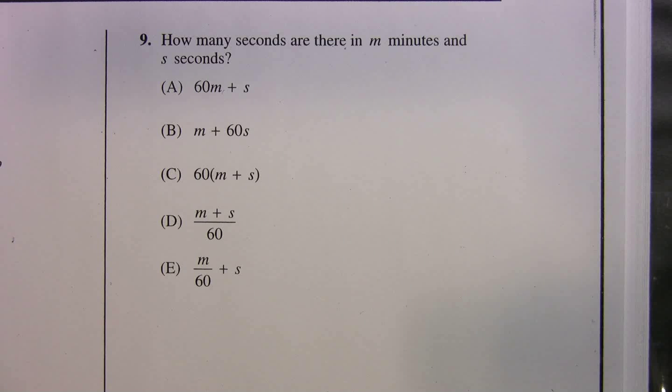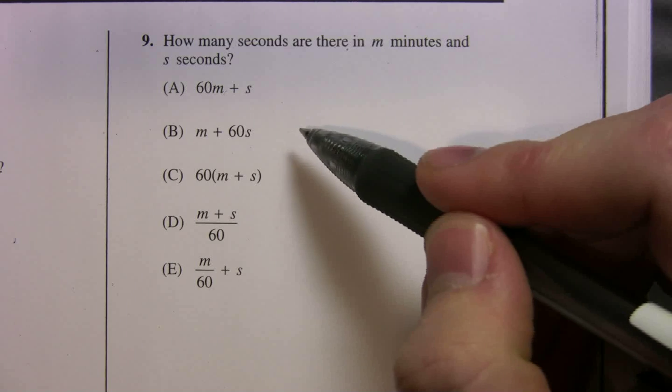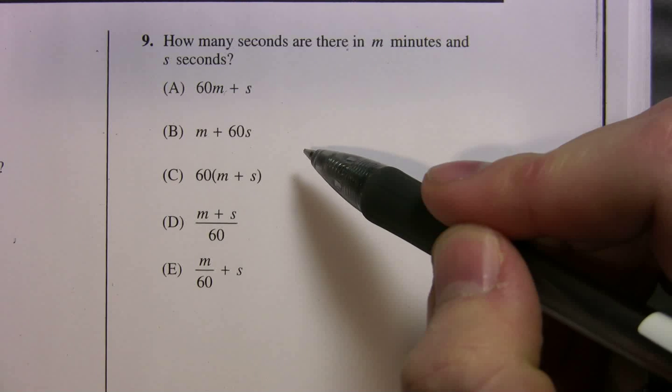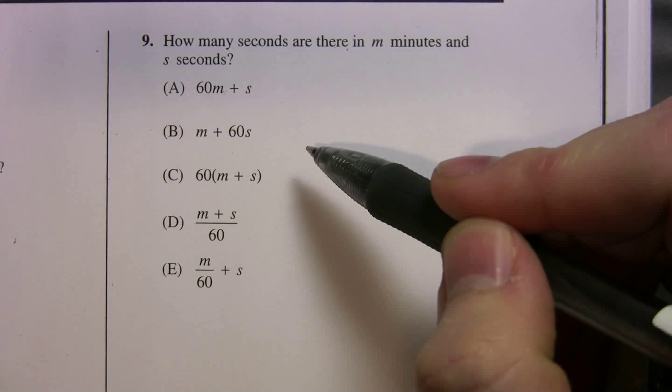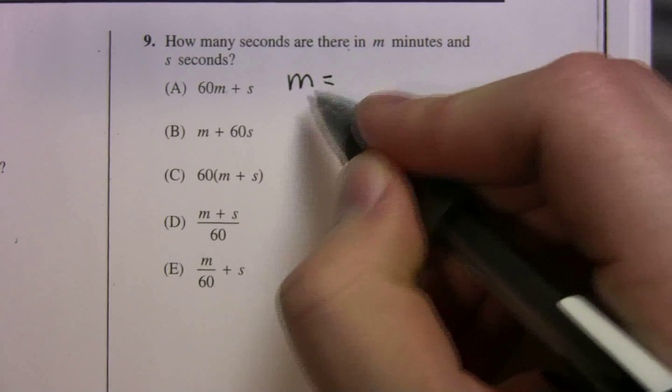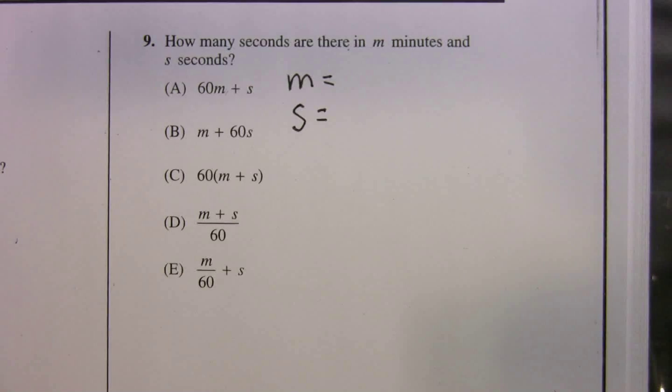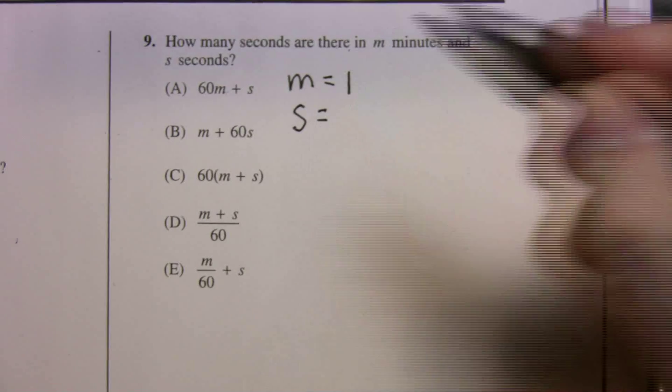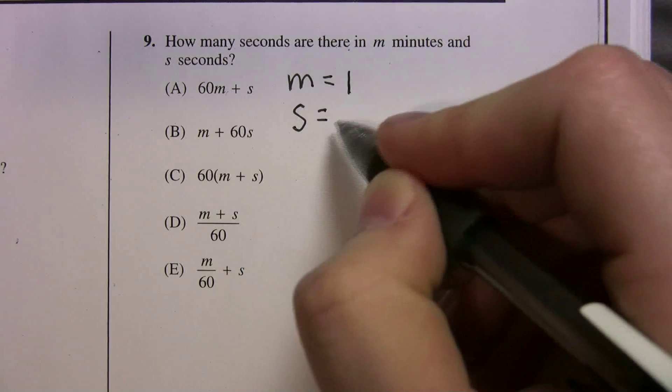So we're on page 787, this is number 9. It says, how many seconds are there in m minutes and s seconds? So all we can do is choose numbers for our variables. Why don't we make m equal 1, we'll make it really easy on ourselves, and we'll make s equal 10.